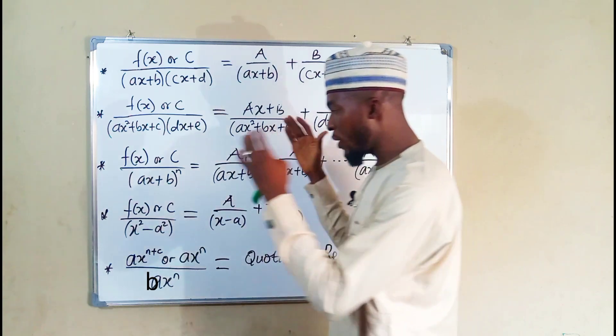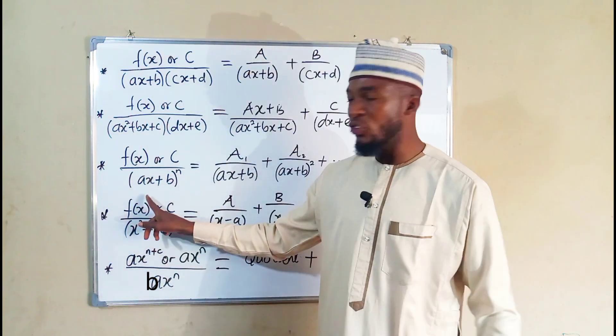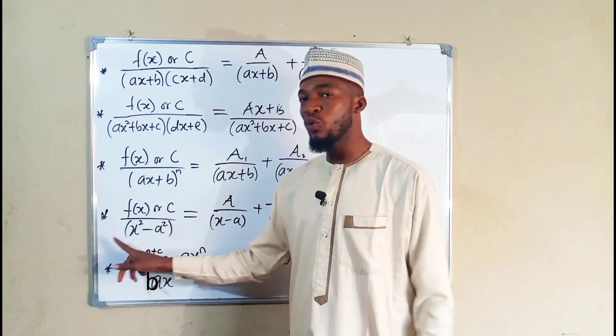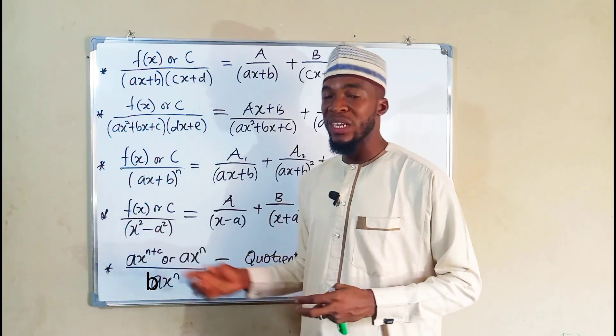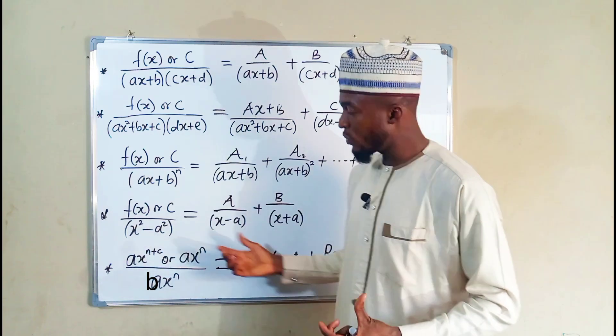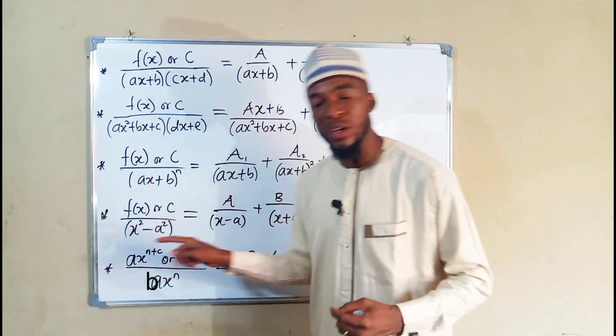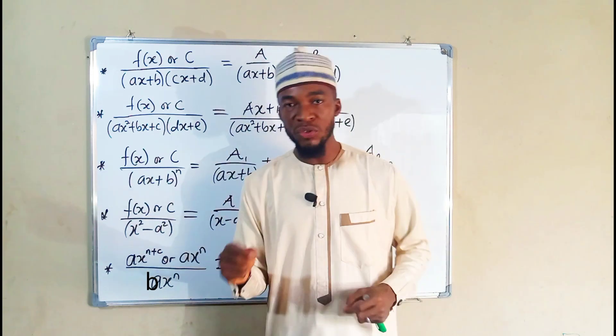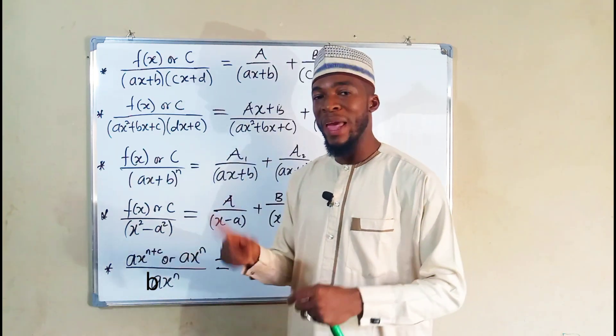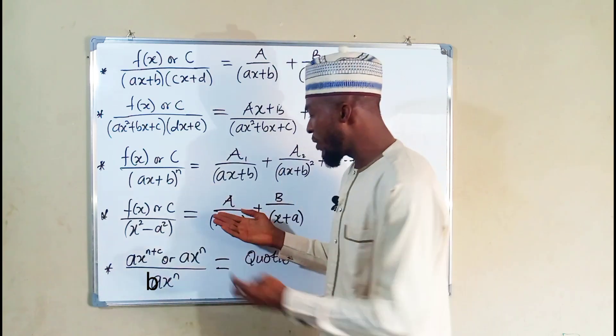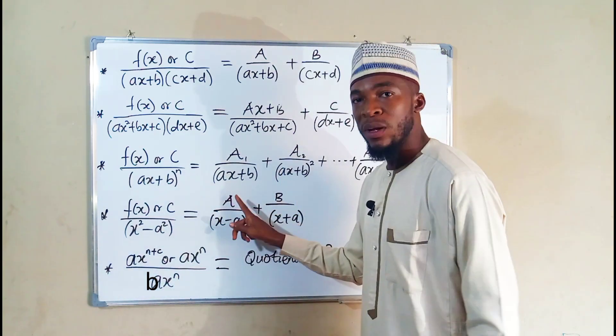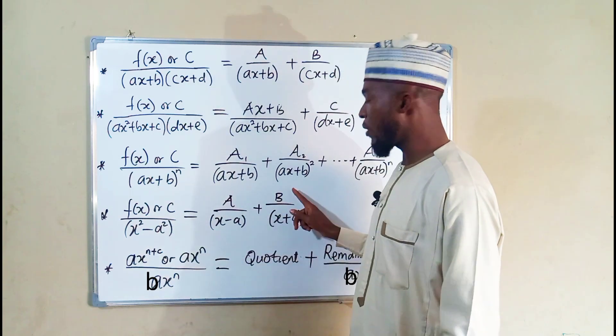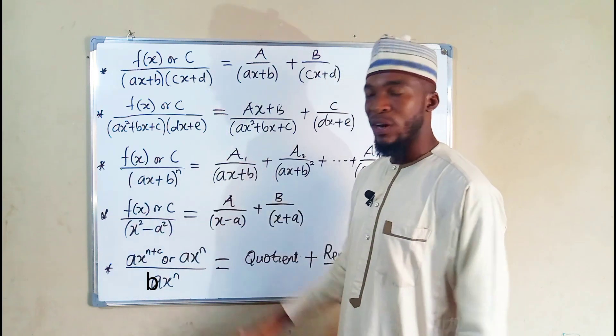And sometimes we may have a compound fraction in this form where we have a function to the top or a constant divided by the difference of two squares. Definitely it is a quadratic function, it can be factorized. Suppose it is an irreducible quadratic factor, we are going to treat it in this form. But since it can be factorized as (x - a) multiplied by (x + a), we are going to split it into this form where we have a constant to the top divided by one of the factors, plus another constant B divided by the second factor.